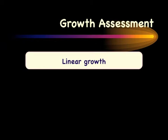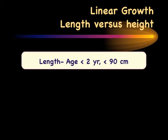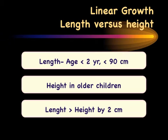The two major aspects of growth assessment are linear growth and adiposity. For linear growth, whether to measure length or height depends on age and size: length is more appropriate for children under two years or less than 90 centimeters, while height is used thereafter. Importantly, length is always 2 centimeters more than height due to stretching of the intervertebral discs, so the transition around age two may show a discrepancy that should not be interpreted as growth failure.